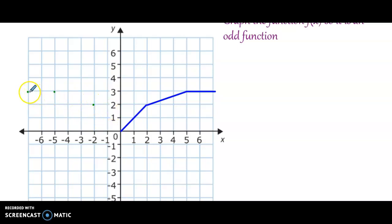And so I get my function reflected over y, but then I also have to reflect it over the x-axis. So then both x and y change, so I'm going to be at negative two negative two, negative five negative three, negative seven negative three. So when I connect my points...